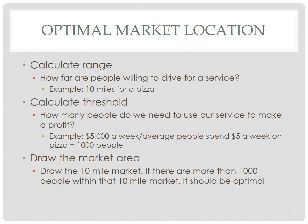From there, you have to figure out your break-even point — at what point do you start to make a profit? That's your threshold. For example, if you need to make $5,000 a week and the average person spends about $5 a week on pizza, that means you need 1,000 people to come into your store to make a profit. You can then draw that range of 10 miles as your market area and use census data or GIS to determine whether 1,000 people live within that area. If yes, the location works; if no, you may want to find another spot.